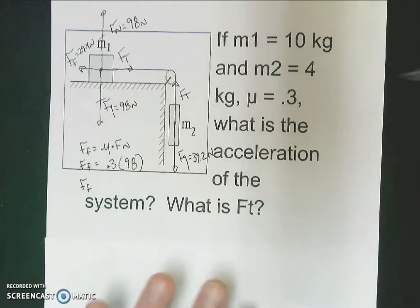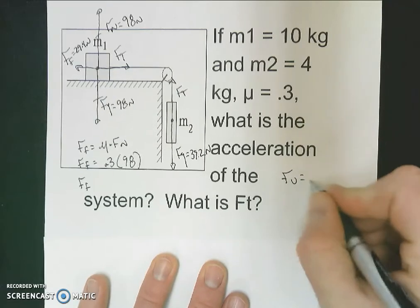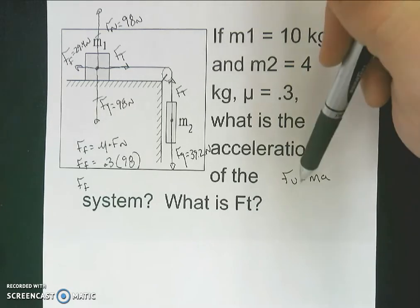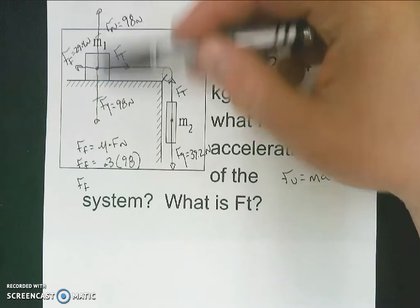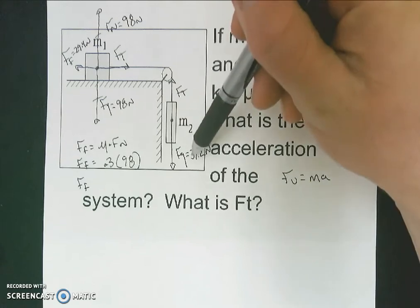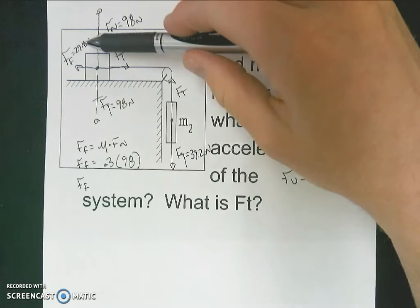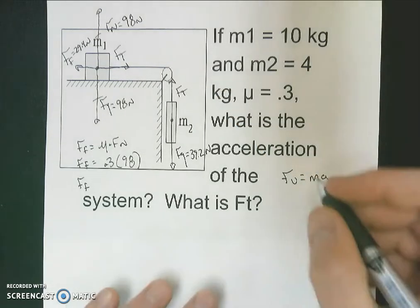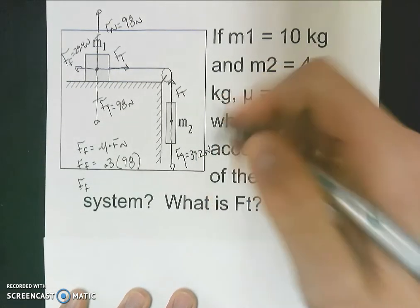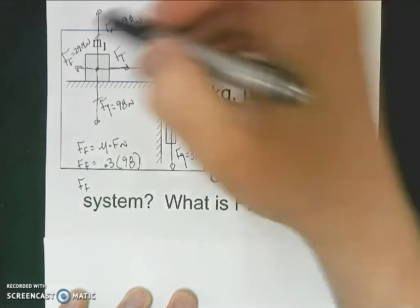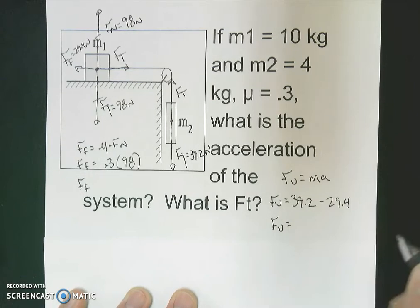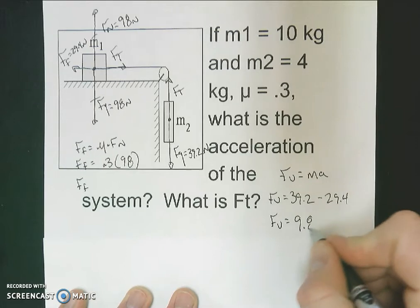If we want acceleration, that means we're going to be finding an unbalanced force to get an acceleration. The tensions cancel each other out since they're the same, so the unbalanced force is going to be the result of our pull down — 39.2 newtons — and our resisting force — 29.4 newtons. So the unbalanced force is the difference: 39.2 minus 29.4, giving an unbalanced force for the system of 9.8 newtons.